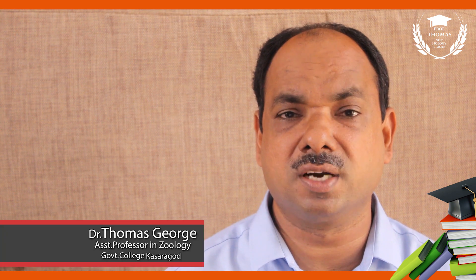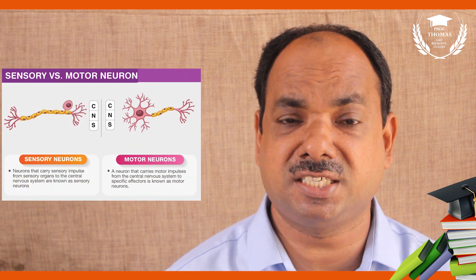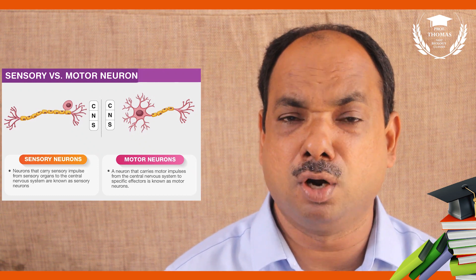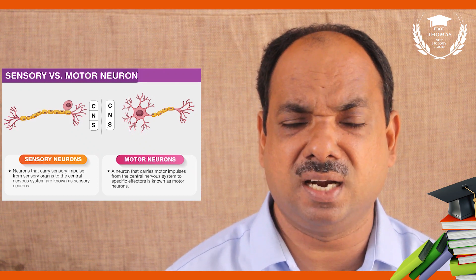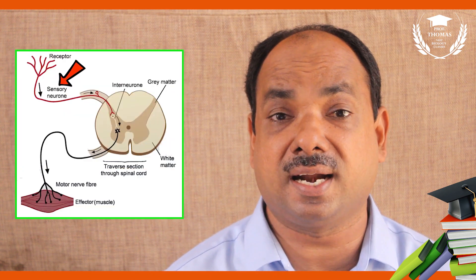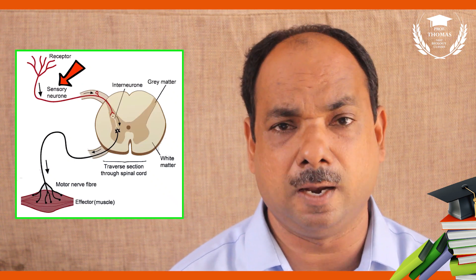Adrenergic neurons secrete adrenaline, while cholinergic neurons secrete acetylcholine. Sensory neurons conduct impulses towards the CNS, and motor neurons conduct motor impulses to the effector. Sensory neurons and motor neurons are connected by interneurons.